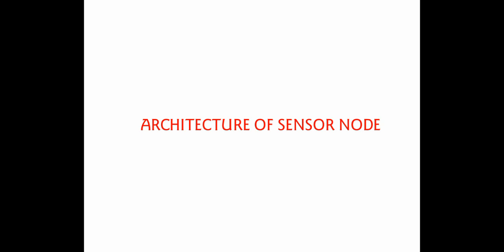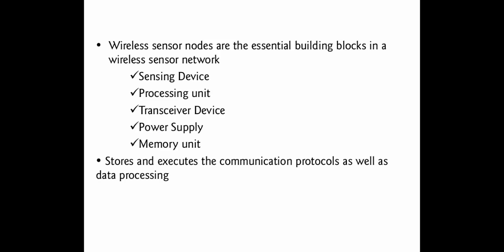The sensor nodes have a sensing device which is used to monitor or record physical environment conditions such as temperature, humidity, intensity, and so on — different parameters at different locations — to cooperatively pass the information to a main location where the data has to be observed and analyzed. Therefore, these wireless sensor nodes are the essential building blocks in WSN.